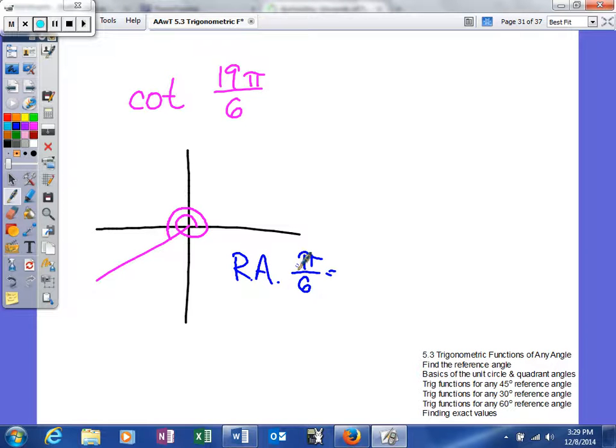You know our reference angle has to be positive and also between 0 and 90 degrees, or 0 and π/2. So 6 will go into 180 30 times. So this is going to be 30 degrees.